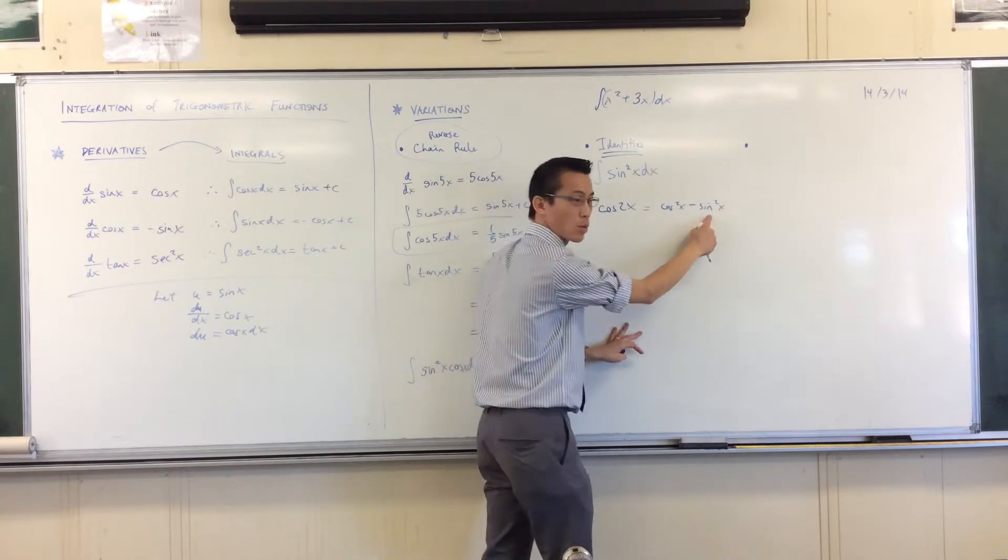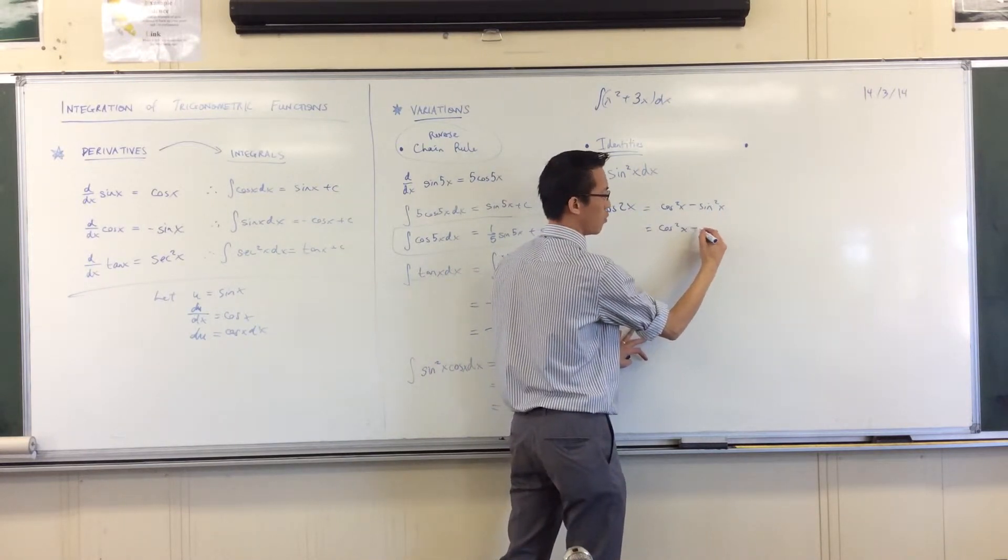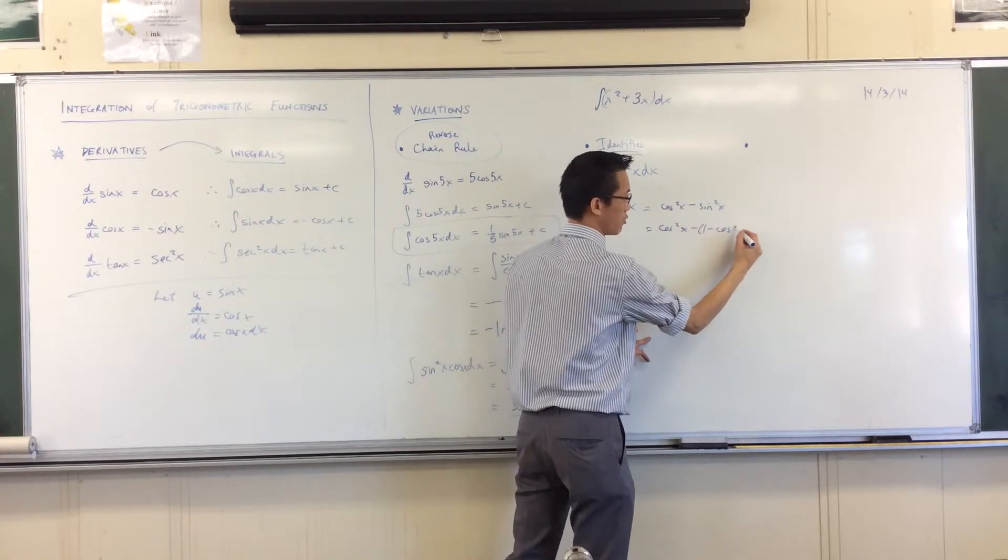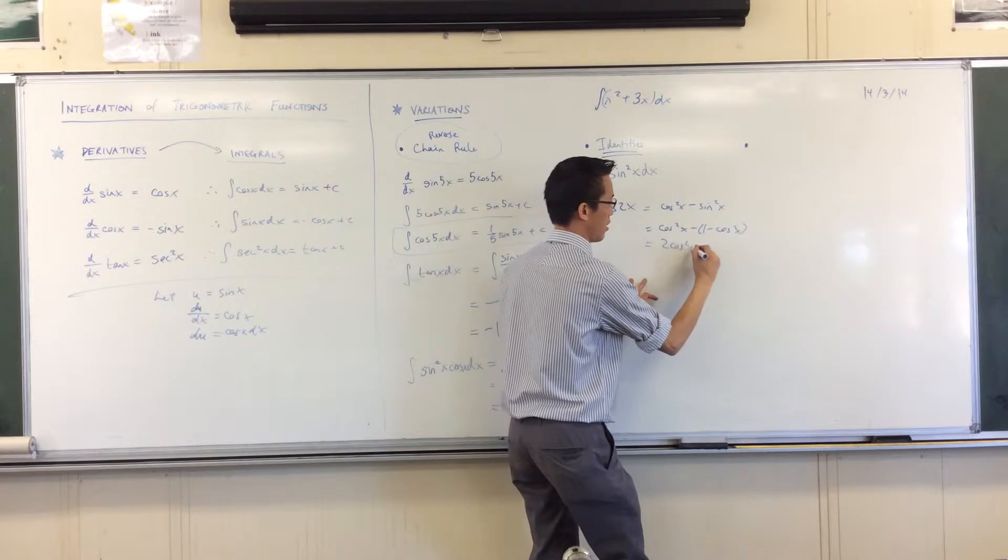Example, I could turn the sine squared into 1 minus cos squared. I could do that couldn't I? Double negative that would give me 2 cos squared minus 1.